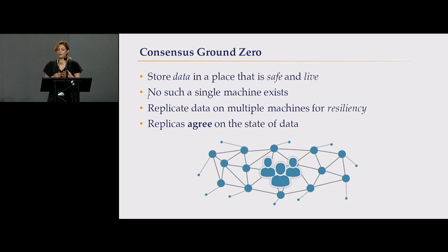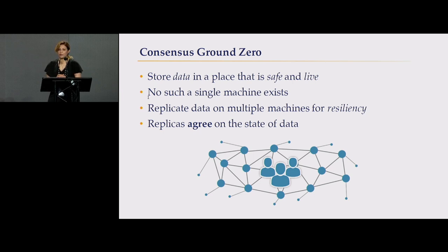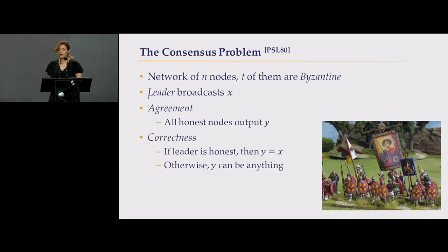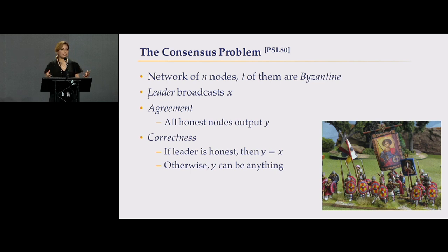Replicating data on multiple machines for resiliency is a very good technique. But then replicas need to agree on the state of the data, and you need agreement. This is the basis for a long time of research, which is the Byzantine agreement, consensus, or the consensus problem.